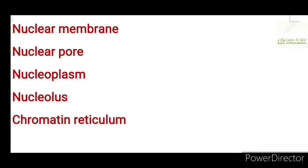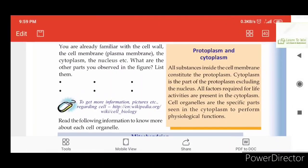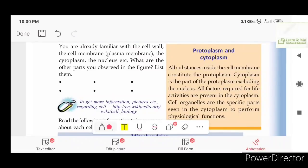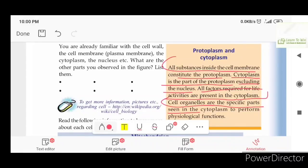The other parts are the nuclear membrane, nucleopore, nucleoplasm, nucleolus, and chromatin reticulum. The cell is made up of protoplasm and cytoplasm. All factors required for life activities are present in the cytoplasm. Cell organelles are the specific parts seen in the cytoplasm that perform physiological functions.